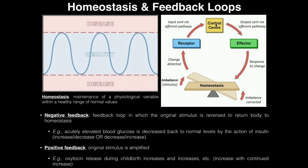Many times the control center is the brain, but it doesn't have to be. In the case of blood glucose levels, the control center is actually the pancreas. That control center is going to send information to some effector — some output that says what we need to do to fix the problem. The effector actually does fix the problem by taking some action, and the imbalance will be corrected back to homeostasis.